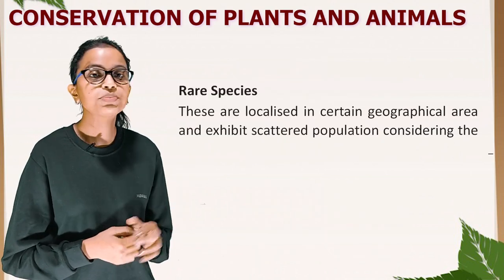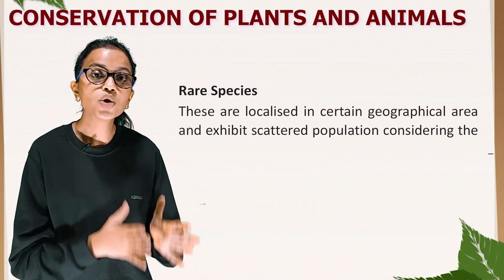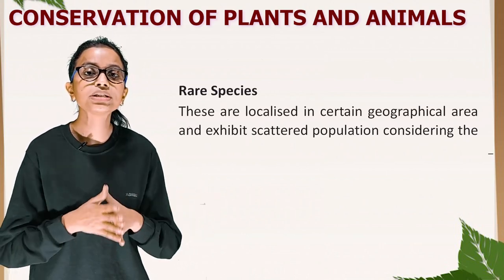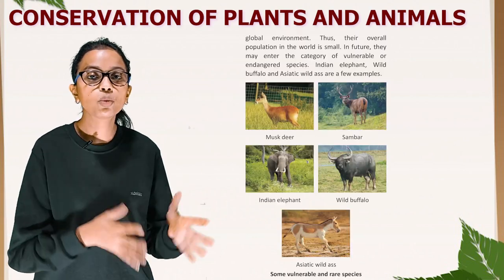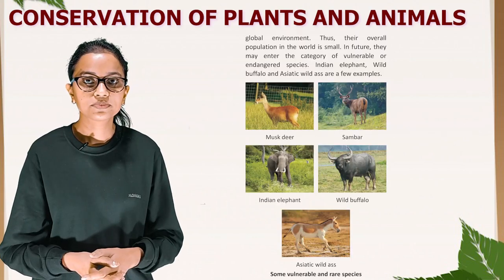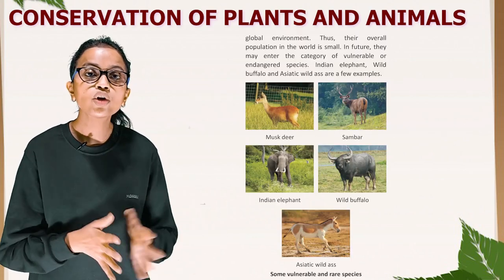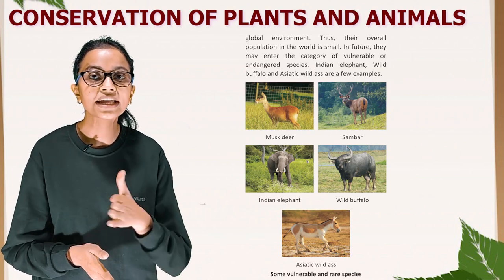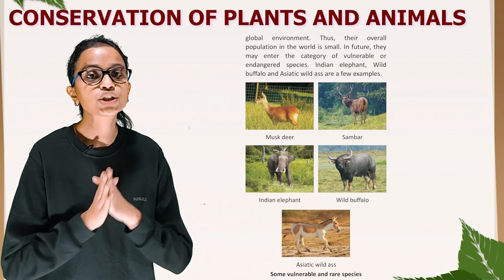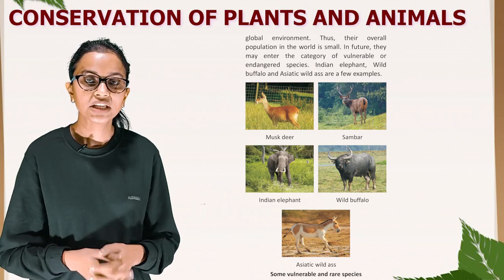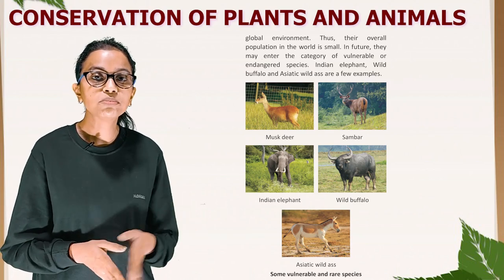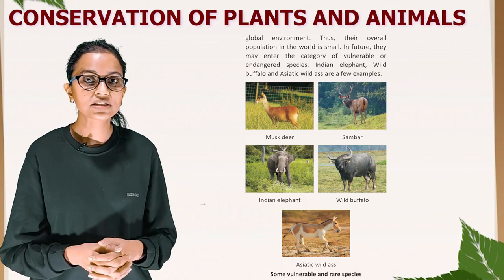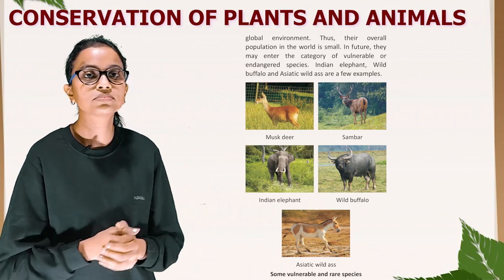Rare species are localized in certain geographical areas and exhibit scattered populations considering the global environment. Thus their overall population in the world is small. In future, they may enter the category of vulnerable or endangered species. Indian elephant, wild buffalo and Asiatic wild ass are a few examples.